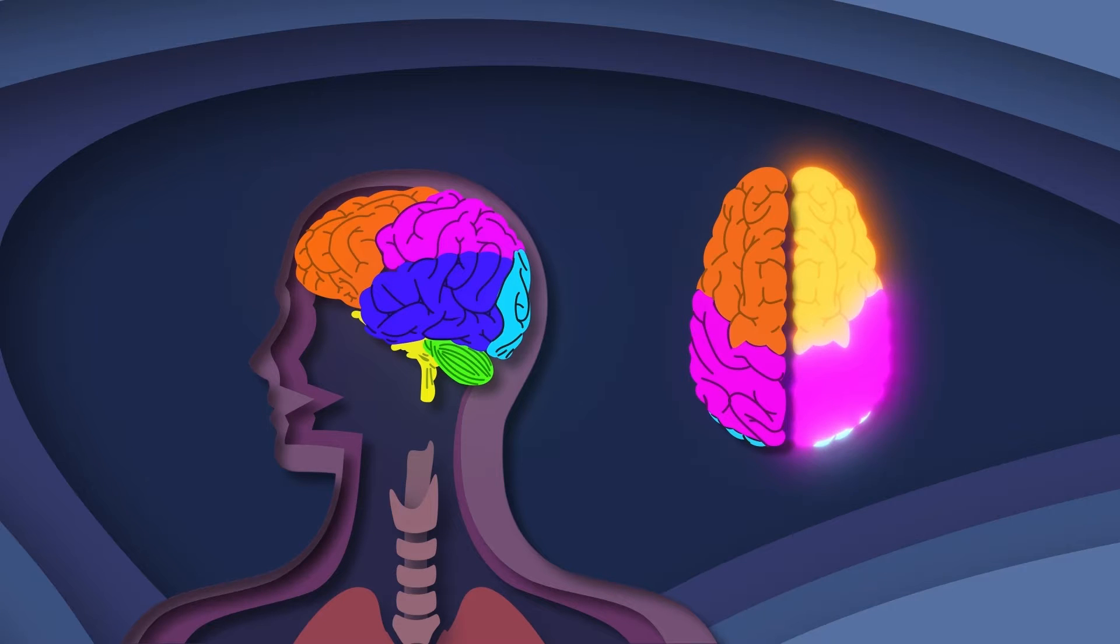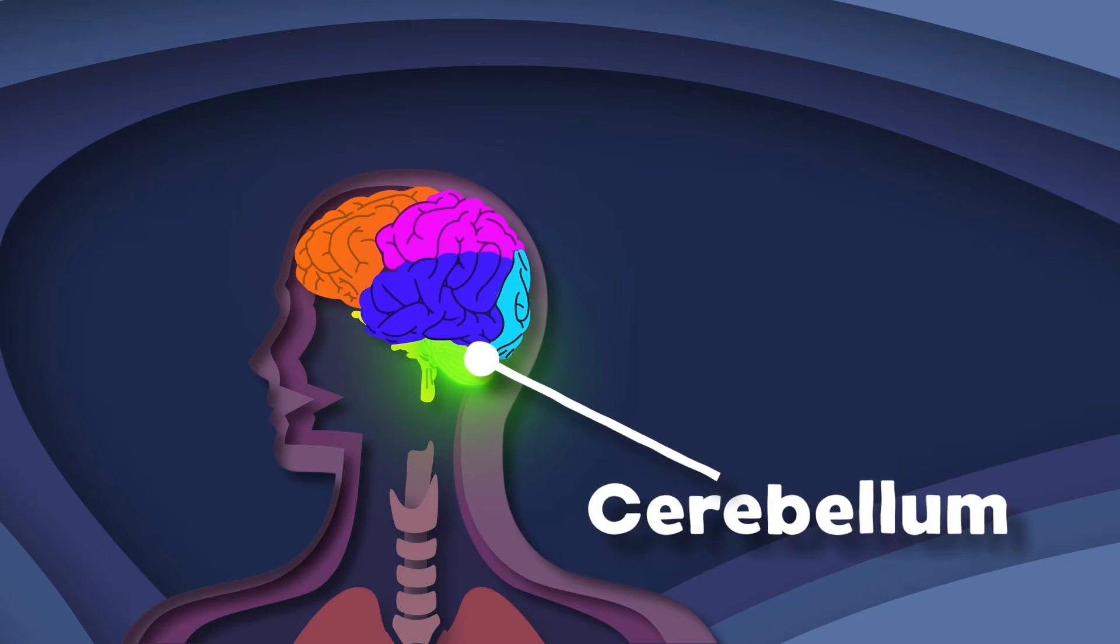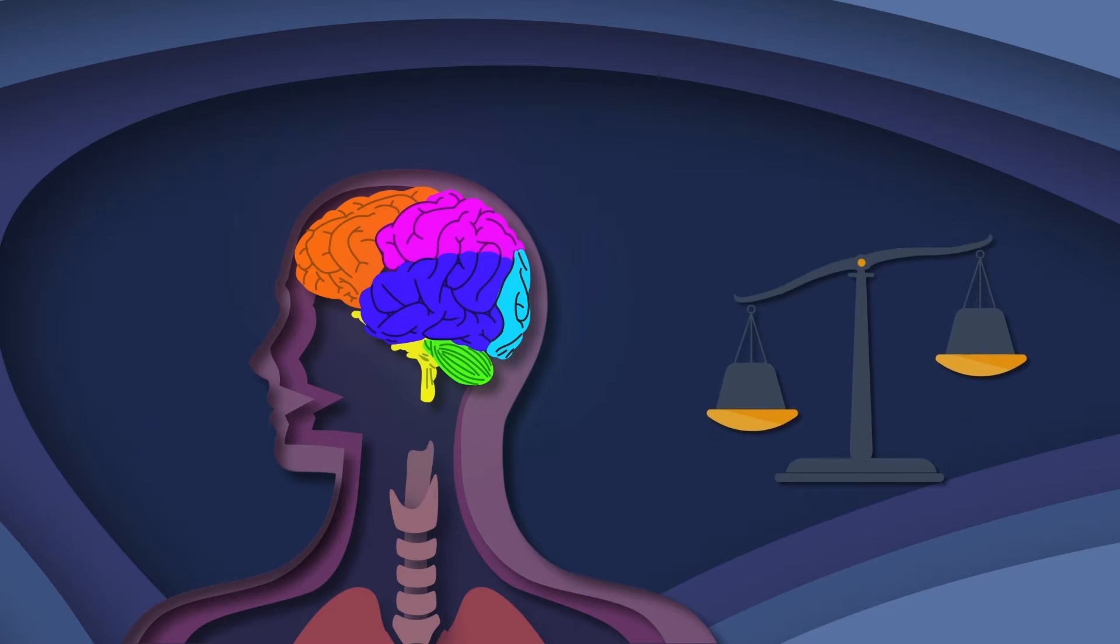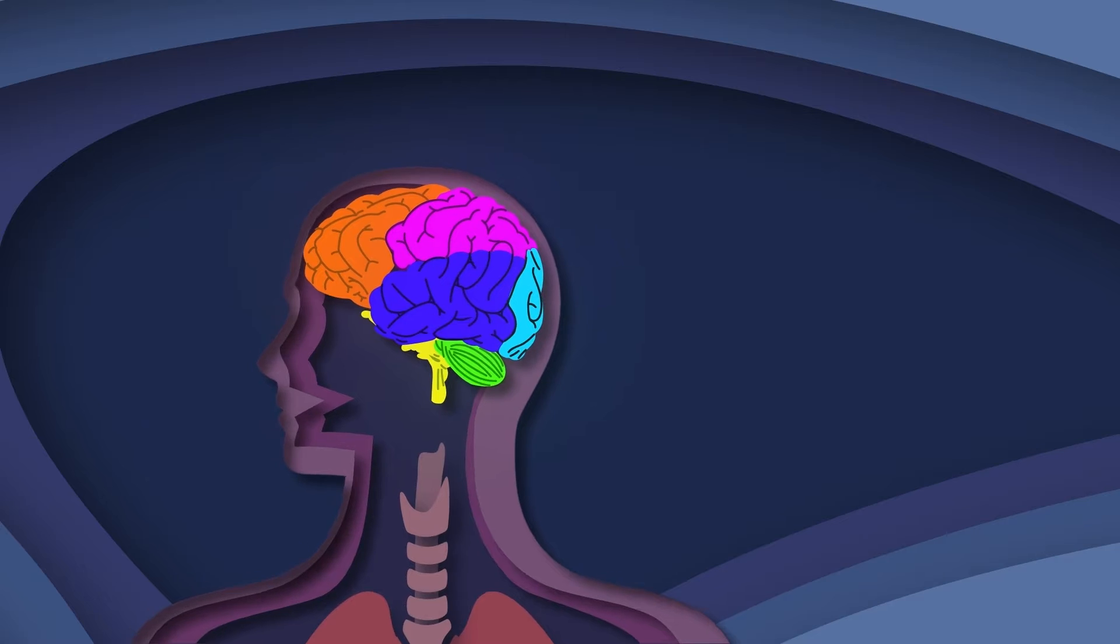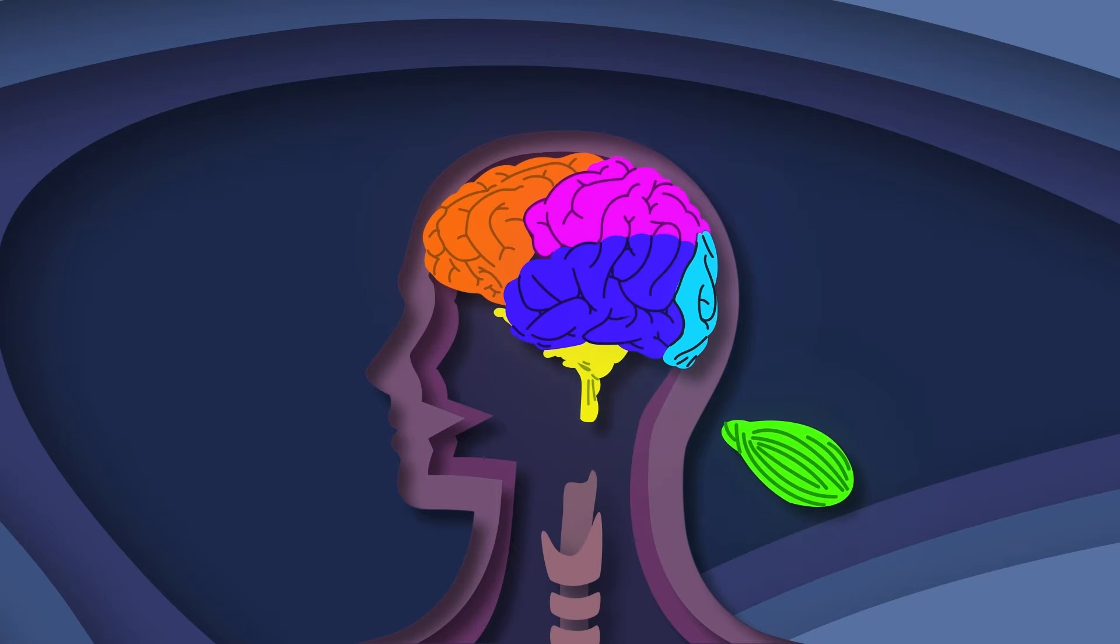The cerebellum controls your posture and your balance. The coordination of your movement is also its talent. It's located in the lower back of your brain. It is rounded in structure as I've gone on to explain.